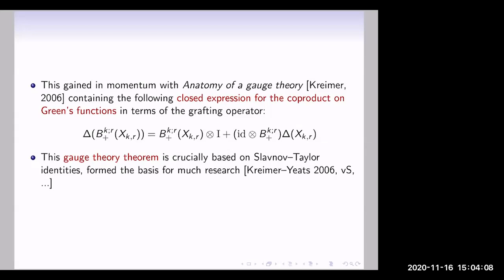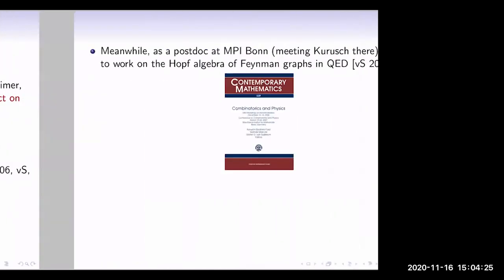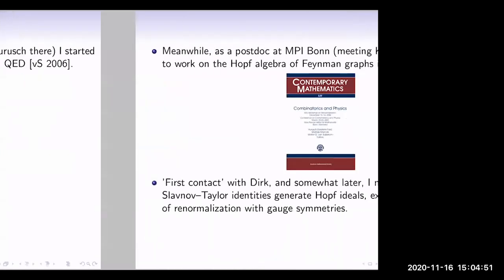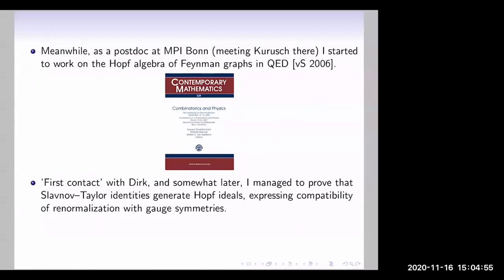This appeared in works with Canepa, with myself and Derek, and many others working in this line. At the time I was a postdoc and met Kurush. We had nice meetings where combinatorics and physics were happening. I started working on Feynman graphs for QED, and a few years later I managed to prove that the Slavnov-Taylor identities generate Hopf ideals, reflecting what Derek had in mind in the anatomy paper.